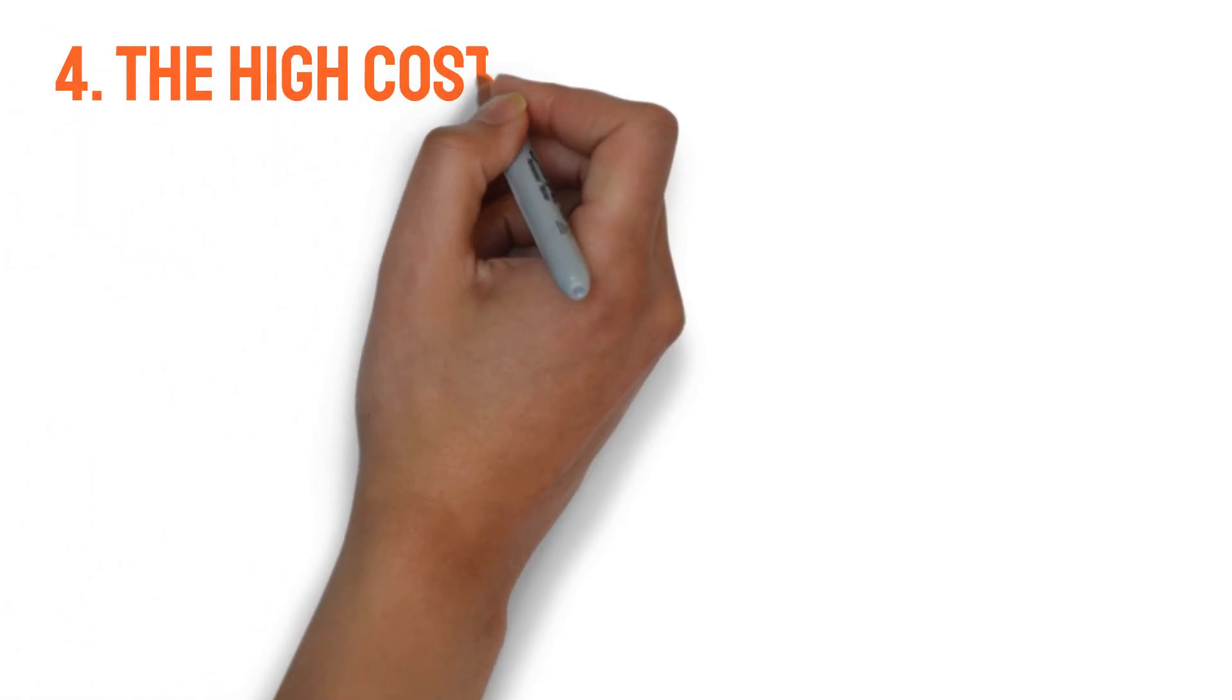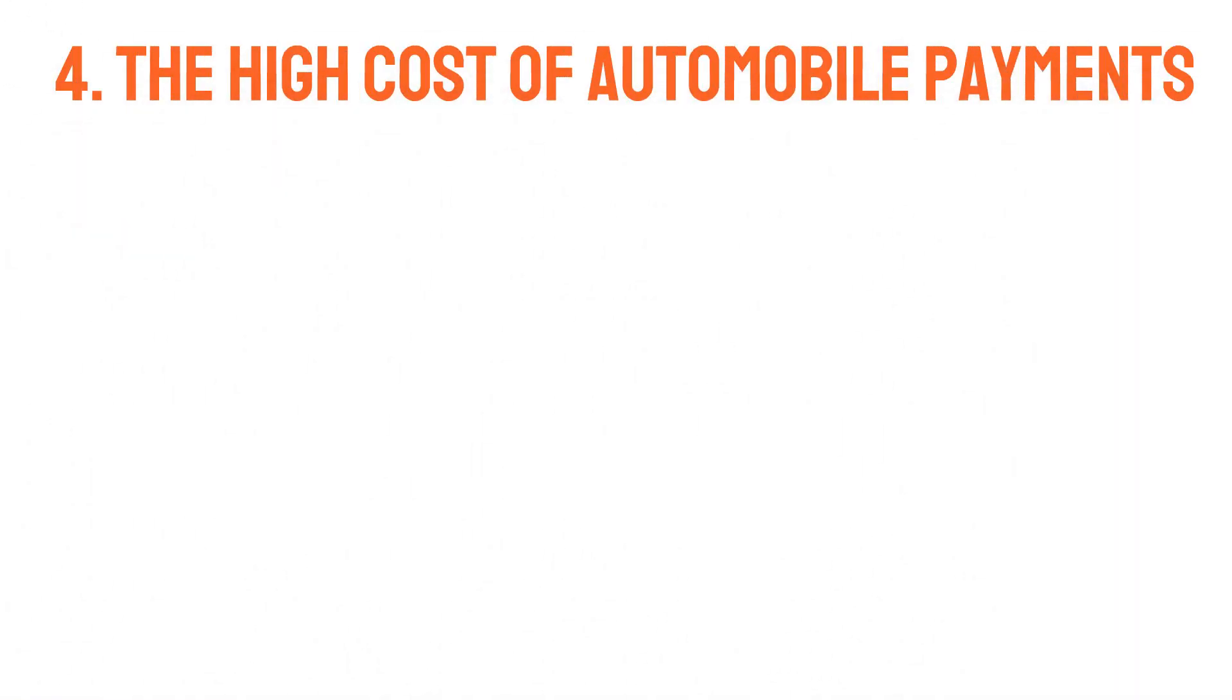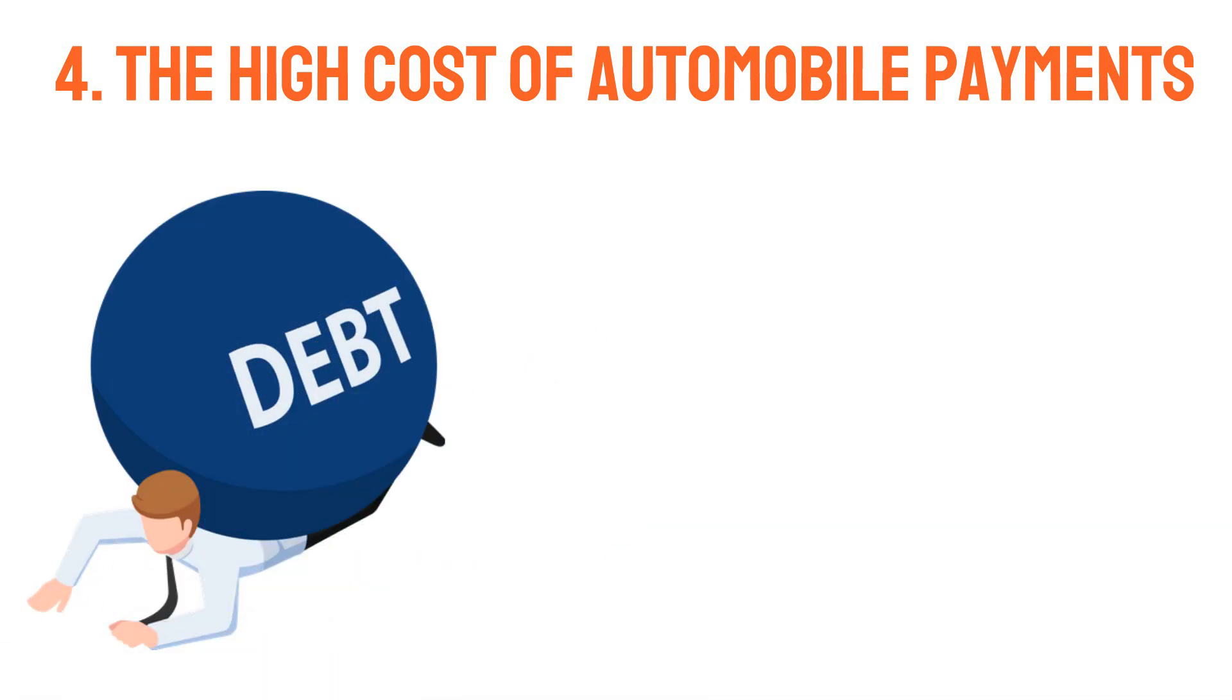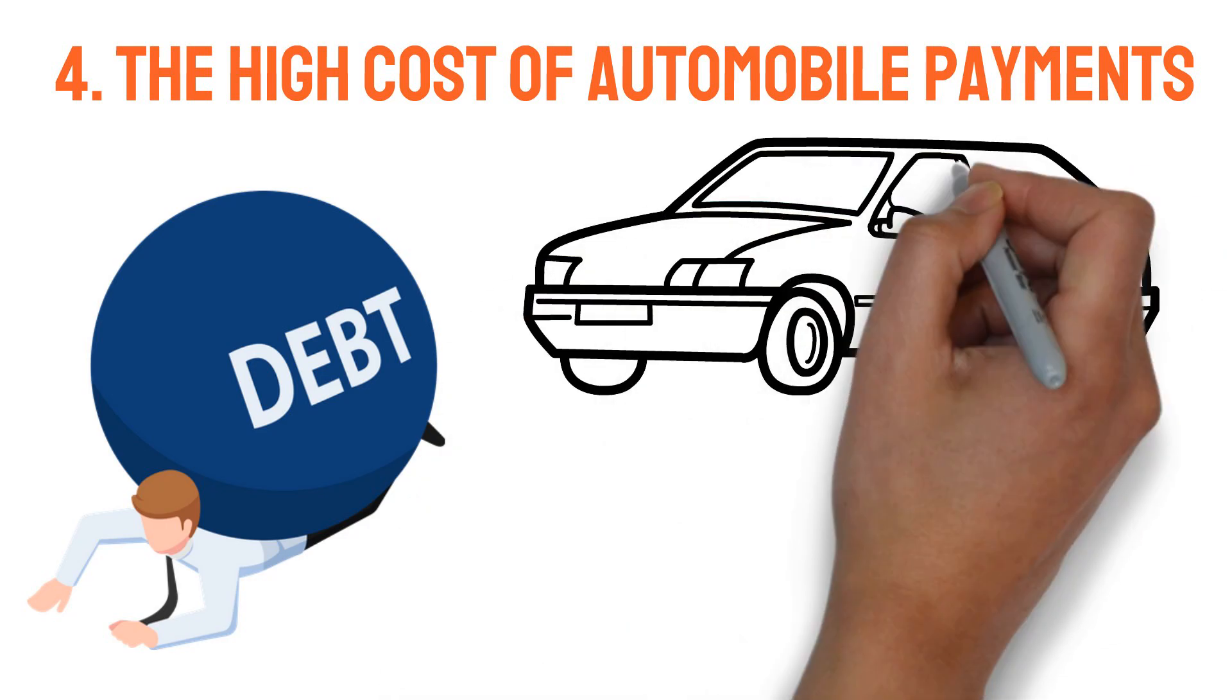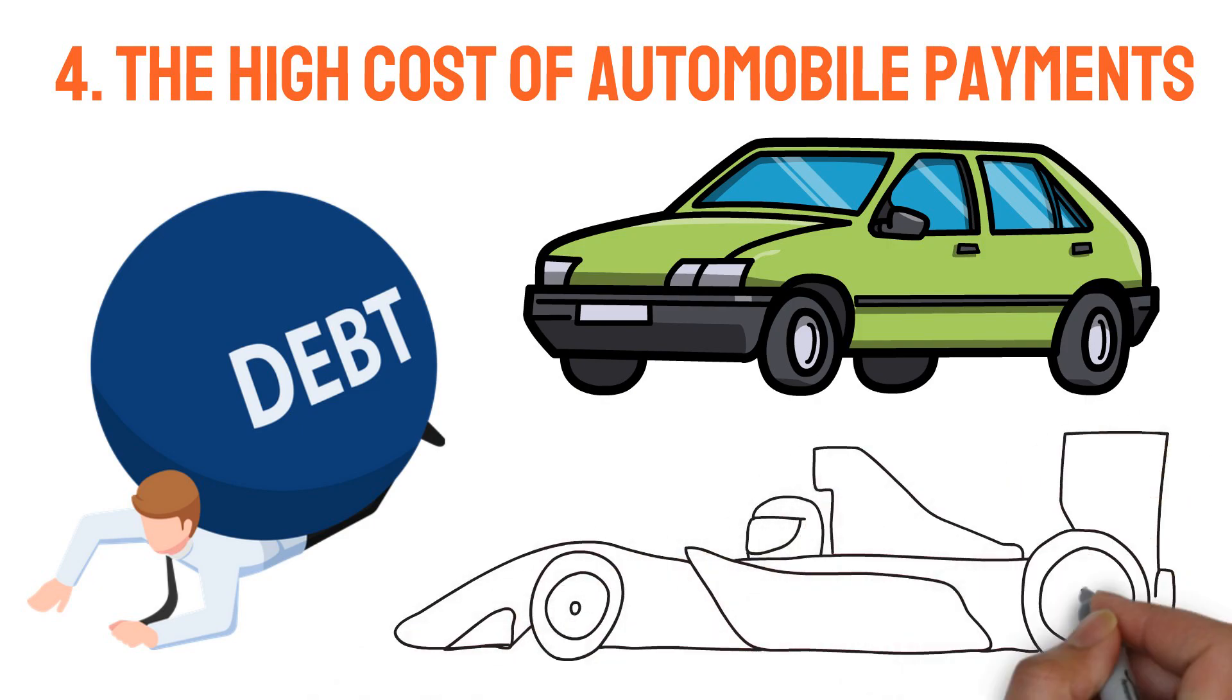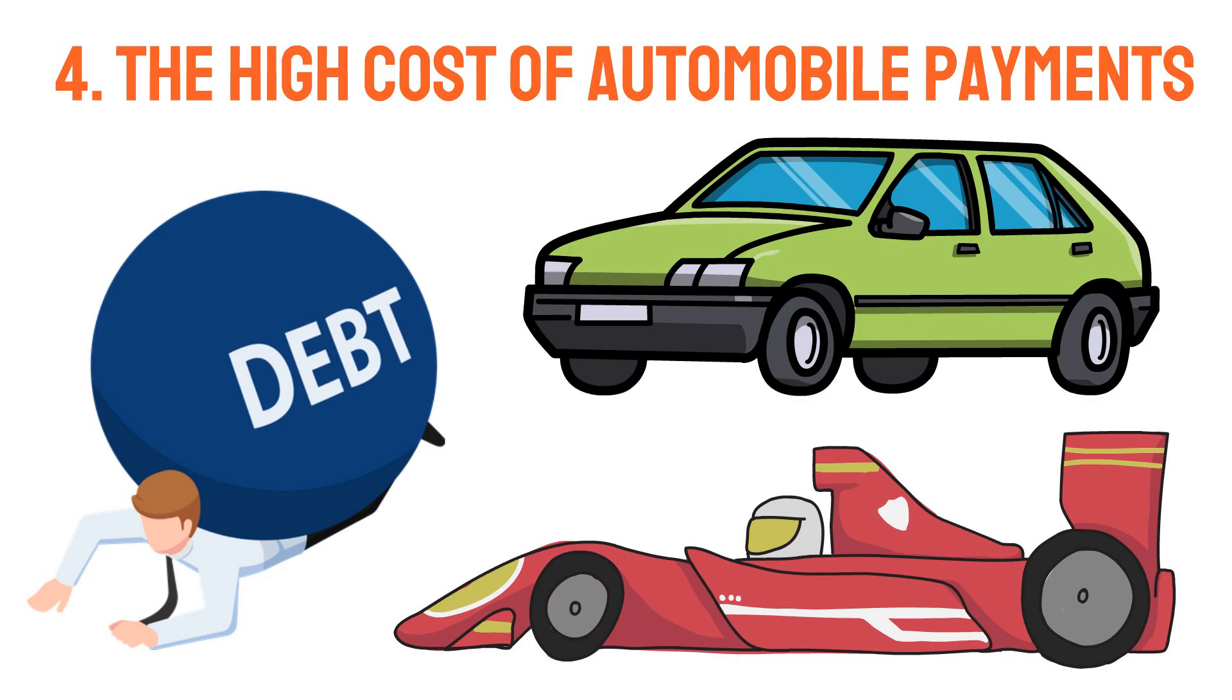Four: The high cost of automobile payments. Instead of taking on long-term debt with expensive monthly payments, wealthy individuals may choose to purchase their vehicles outright or lease them for shorter terms. Long-term debt such as a high vehicle payment is a common indicator of poor financial health.